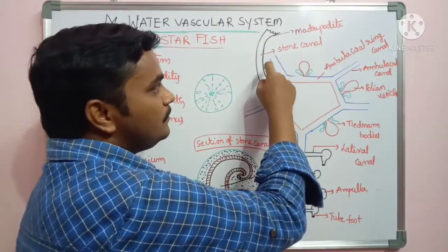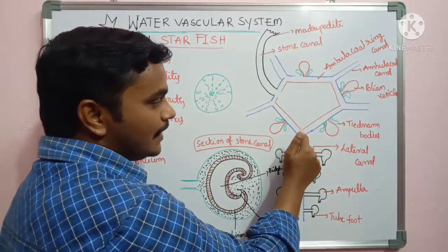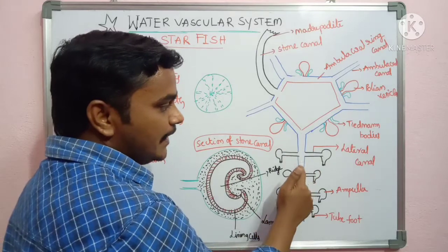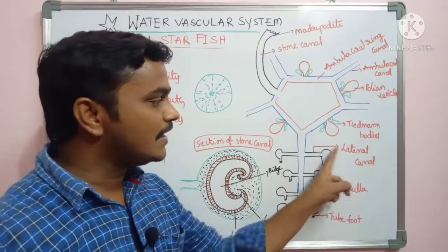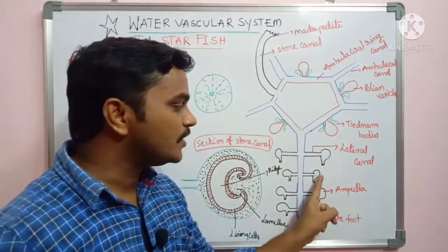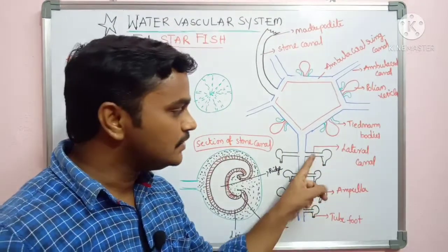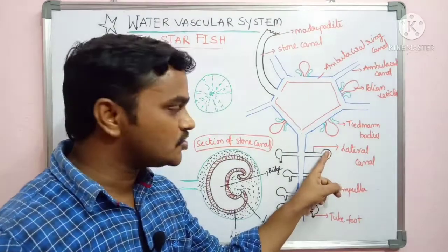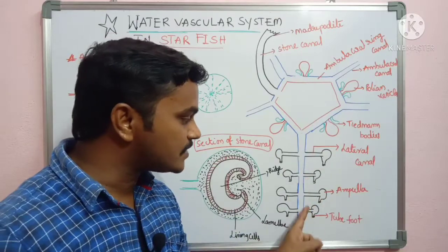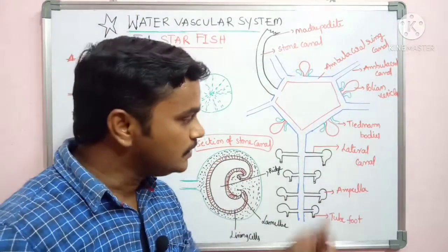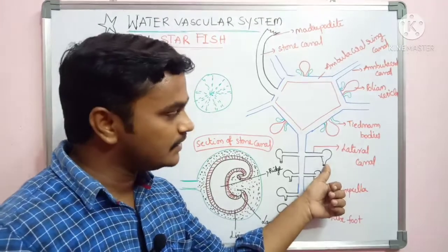Water enters through the stone canal to the ambulacral ring, and from the ambulacral ring to the radial canal. From the radial canal, water enters into the lateral canal. The lateral canal contains two branches and opens into a bulb-like structure — the tube feet. One branch enters into the ampulla region of the tube feet, and another branch enters into the sucker of the tube feet.